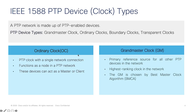A PTP network is made up of PTP-enabled devices. There are different PTP device types: ordinary clocks, grandmaster clocks, boundary clocks, and transparent clocks. An ordinary clock is a device with a single connection — usually an end device on a network. It can be a PTP client, preferred grandmaster, master clock, or slave clock.